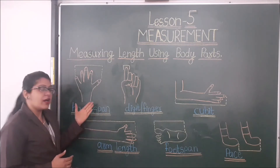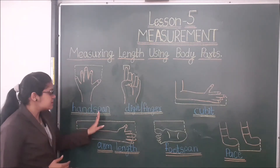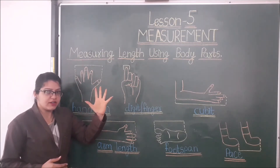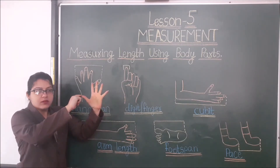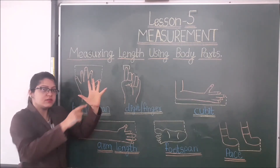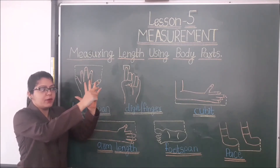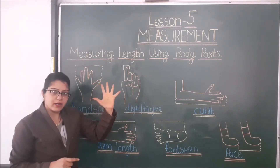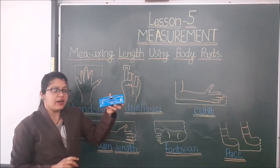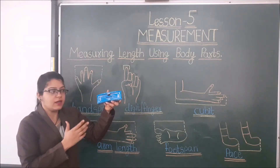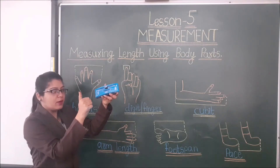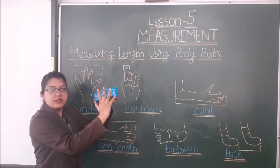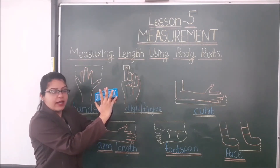Let's see how we can measure anything with the help of our body parts. The first is hand span. We have to stretch our fingers and measure from thumb to the last finger — this is one hand span. Now let's measure one thing. I have one ruler. Put your thumb on this point and your last finger on this point — this is one hand span. This is the length of the hand span.